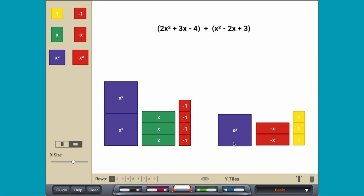To add polynomials like 2x squared plus 3x minus 4 plus x squared minus 2x plus 3, start by grouping like terms.